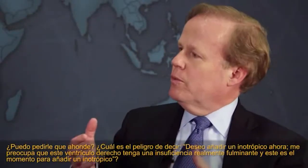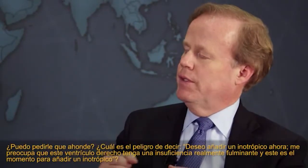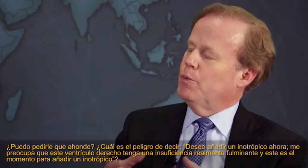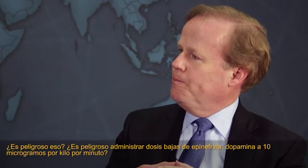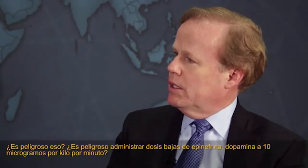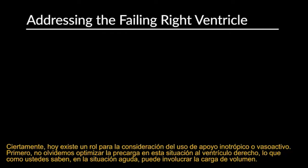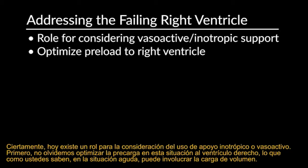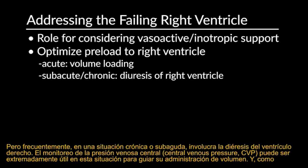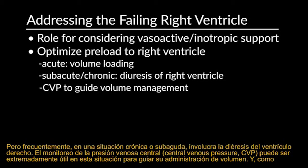What's the harm of adding an inotrope now if the RV is in full minute failure — low dose epinephrine, dopamine at 10 mcg/kg/min? Certainly there is now a role for vasoactive or inotropic support. First, don't forget about optimizing preload to the right ventricle — in the acute situation this may involve volume loading, but in subacute or chronic situations it often involves diuresis. CVP monitoring can be extremely helpful to guide volume management and to identify a pulmonary hypertensive crisis, where you'd expect right atrial pressure to be elevated and then decreasing as the crisis is broken.